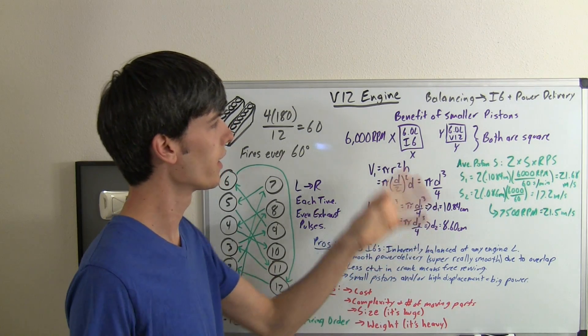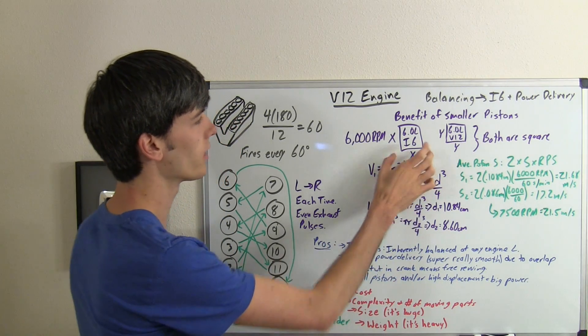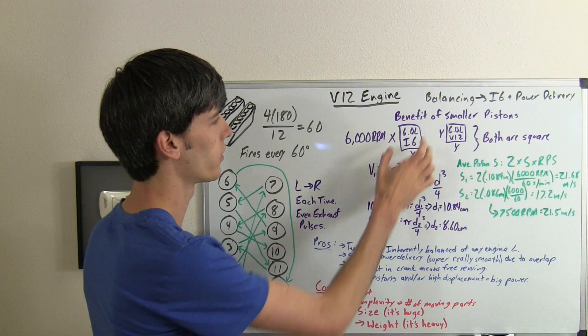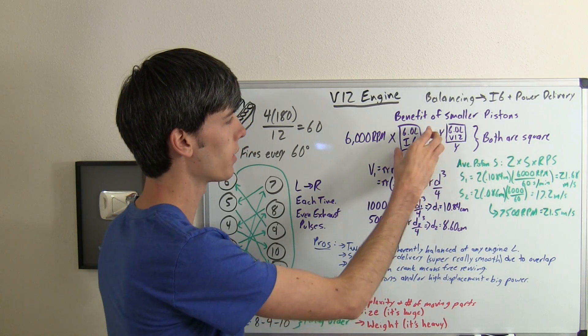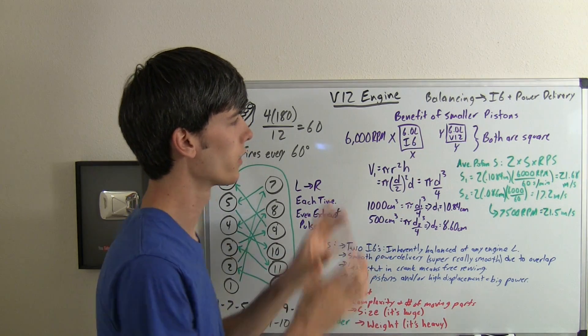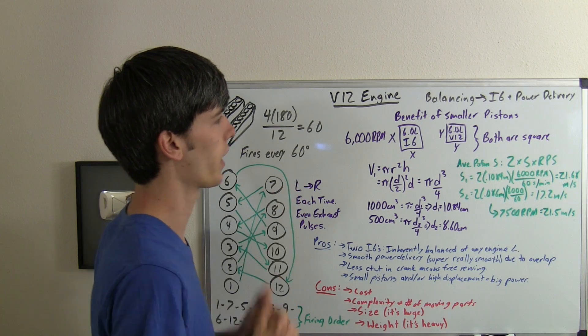So what I want to talk about in this instead is the benefit of using smaller pistons. So in this example, I'm going to have an inline 6-cylinder, which is going to be a 6-liter engine, or a 6-liter V12 engine. And to keep things simple, I'm going to make both of these square cylinder bores. So both the bore and the stroke are the exact same.